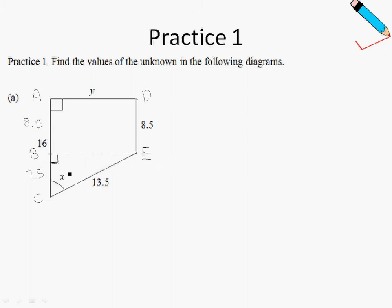We will first start by finding angle X. If we look at triangle BCE, the side that is opposite to angle X will be over here, the adjacent will be over here, and the hypotenuse will be over here. Since we are given the adjacent and the hypotenuse, we should be using cosine.